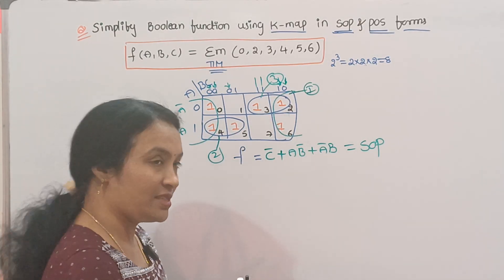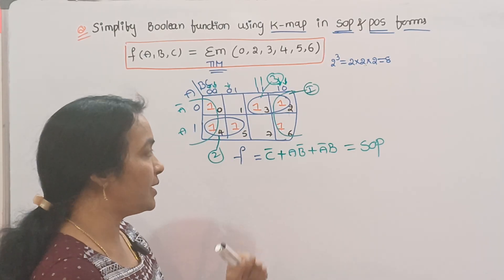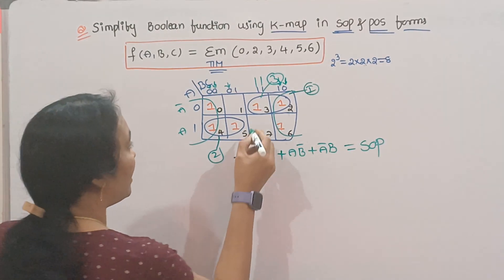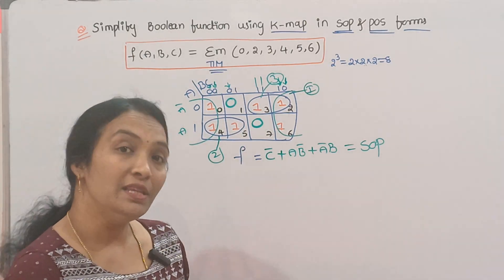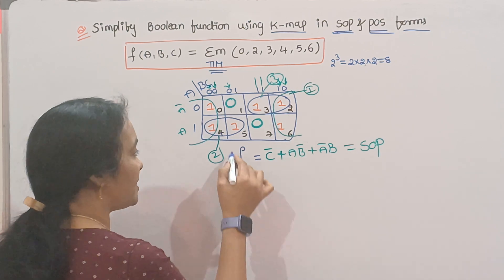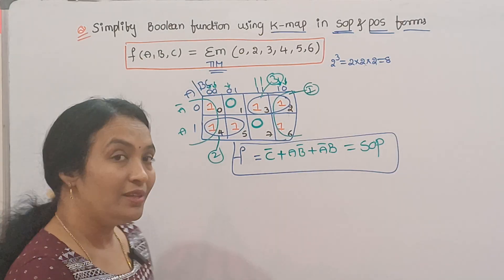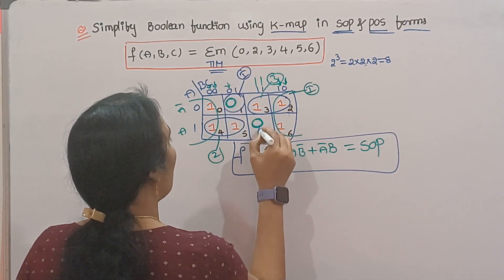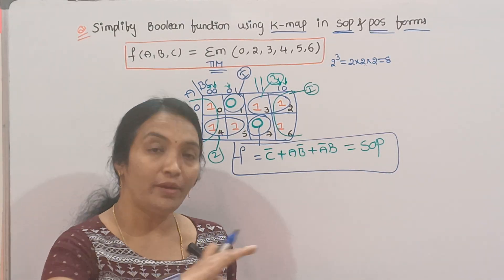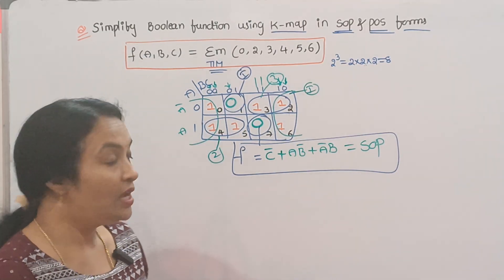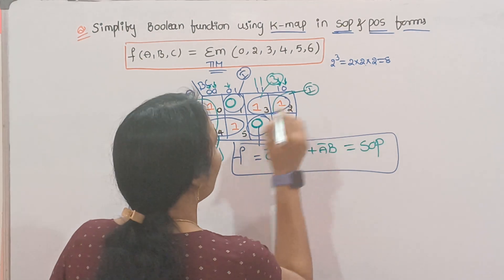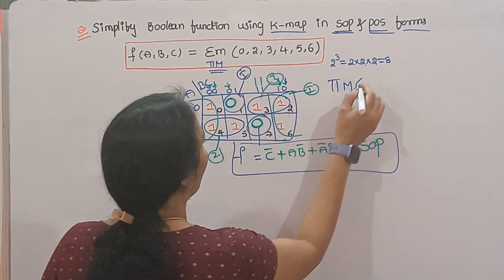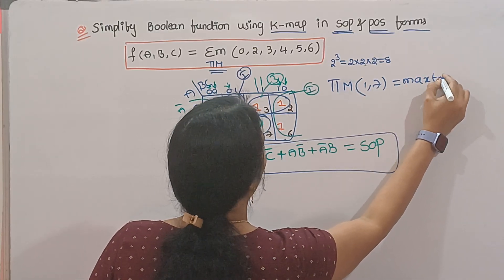If you want to make the POS, the next step is POS. After the remaining cells, you need to insert zeros. I insert zeros in the grouping of POS. The zeros grouping — this is the first group. Grouping is either horizontal or vertical; diagonal is not allowed. The remaining terms are the max terms — Pi of M. There are 1 and 7 of the max terms. Each of these will become the max terms, making the POS.